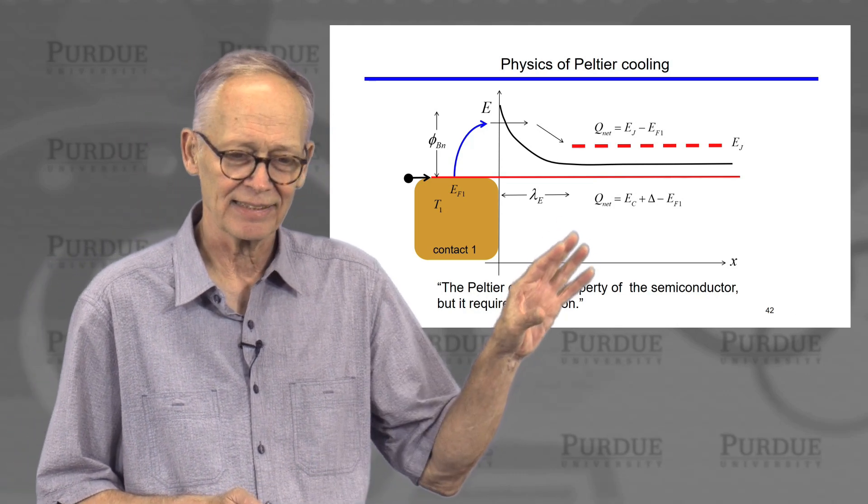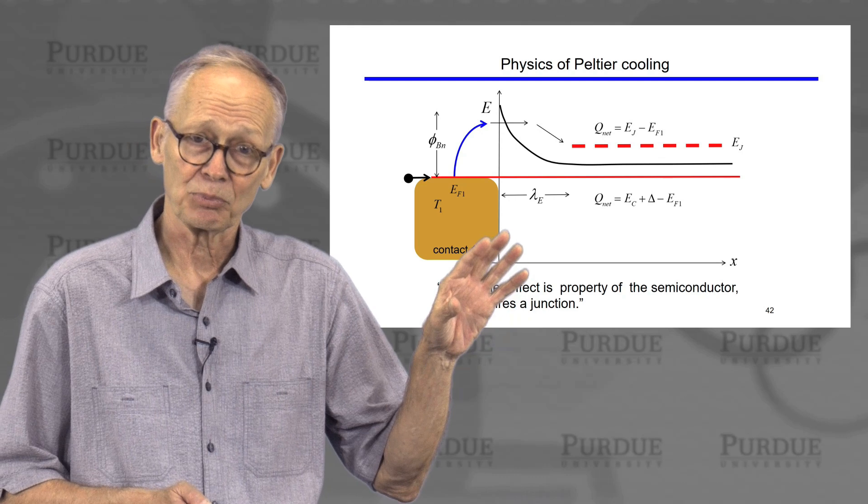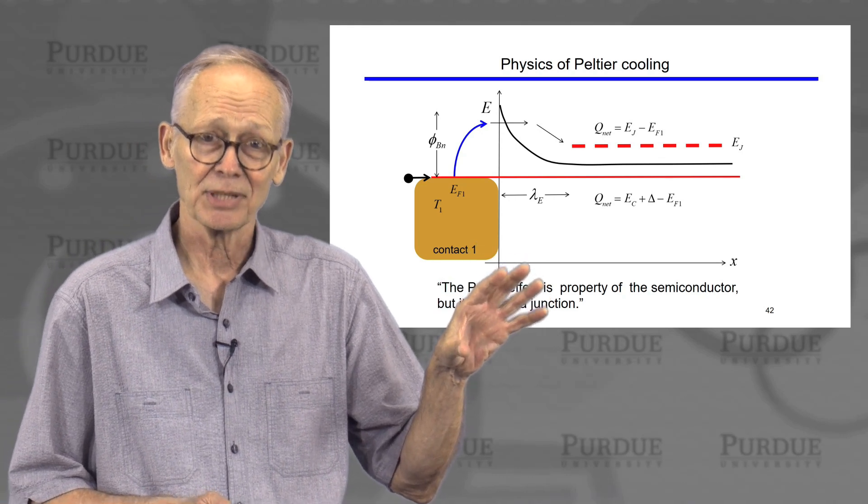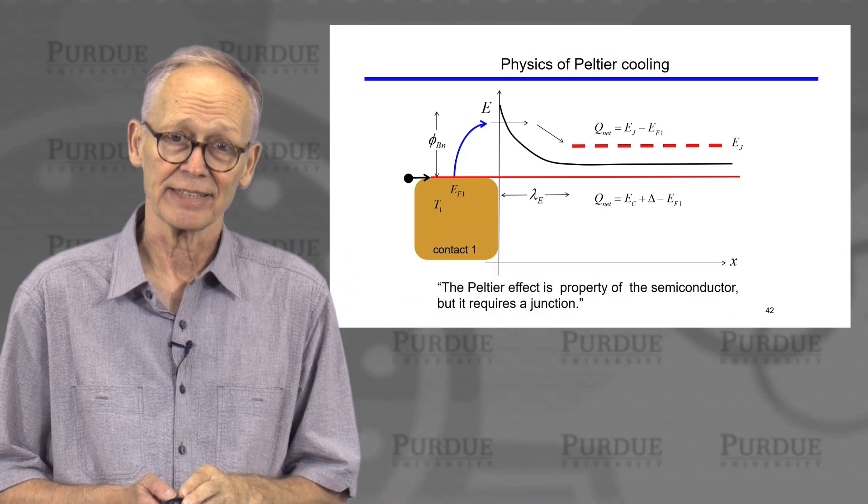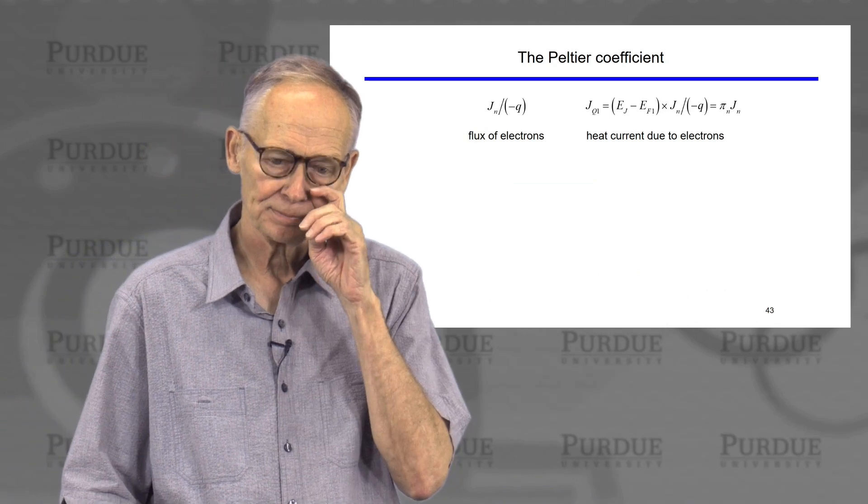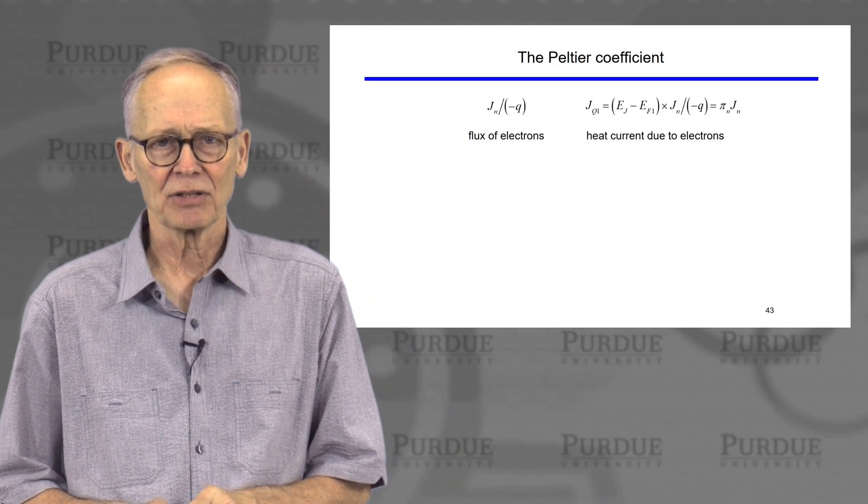People oftentimes say that the Peltier effect is a property of the semiconductor, but it requires a junction to see it happen. All right, now let's look at the Peltier coefficient.